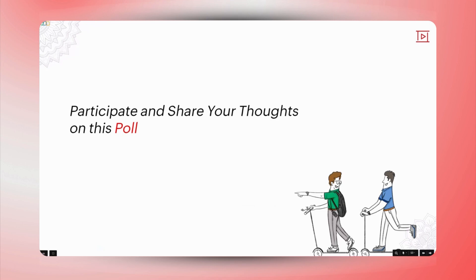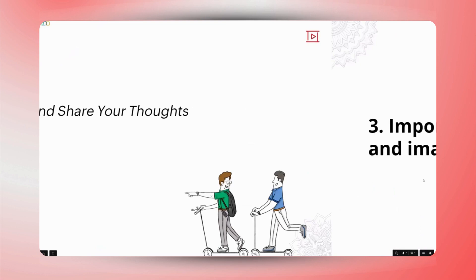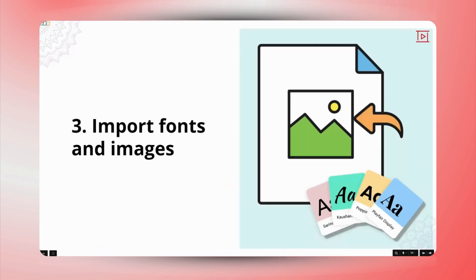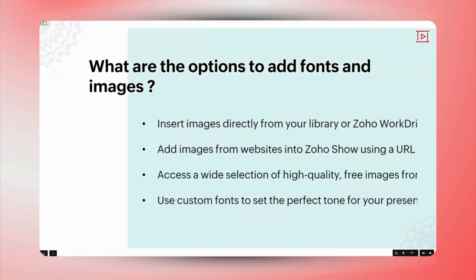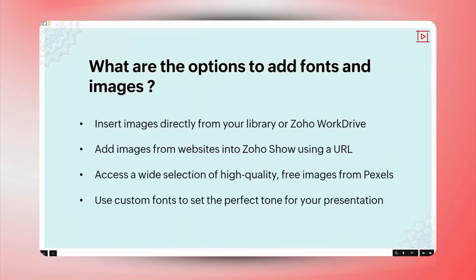To continue — let's say I'm preparing a series of presentations for a brand that requires a specific set of fonts for consistency in their branding. How would I achieve that with Zoho Show? Zoho Show gives you multiple ways to add fonts and images. You can insert images directly from your library or Zoho Work Drive, add images from a website using a URL, or choose from high-quality Pexels images. As for fonts, you can add custom fonts to set just the right tone.